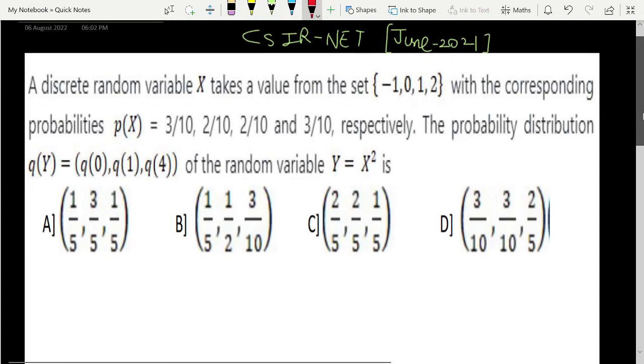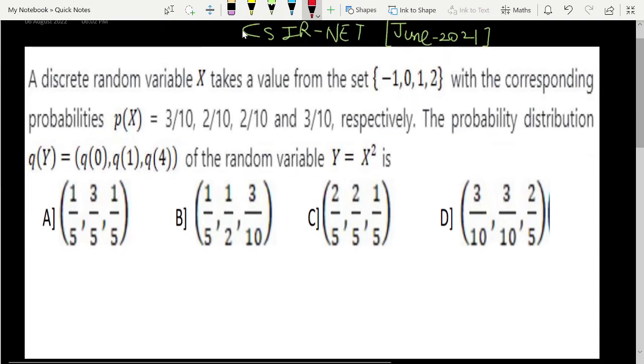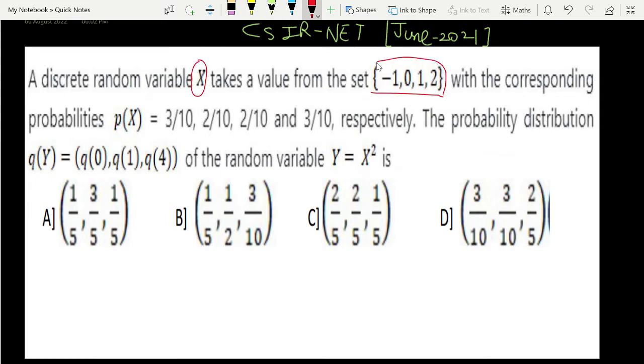You can see the question here: a discrete random variable X takes a value from the set {-1, 0, 1, 2} with the corresponding probabilities 3/10, 2/10, 2/10, and 3/10 respectively. The probability distribution q(Y) where Y equals X squared, so whatever X you select, its square should be the value. The question asks you to find the probability for Y equals 0, 1, and 4.